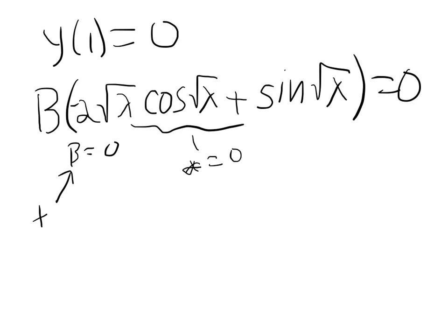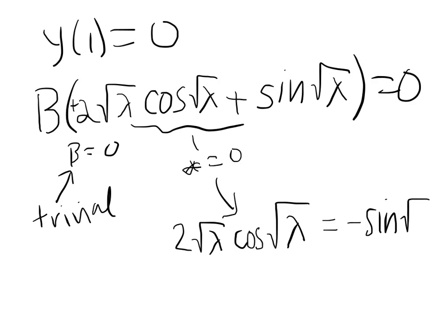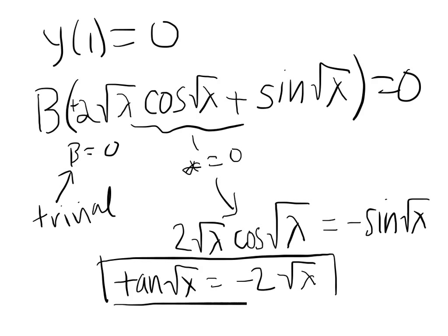That would be just the trivial solution. To get a non-trivial solution, you want this to equal 0. So you have 2·sqrt(λ)·cos(sqrt(λ)) = -sin(sqrt(λ)), which is the same thing as saying tan(sqrt(λ)) = -2·sqrt(λ). And that is as far as we want to go for solving our eigenvalues.